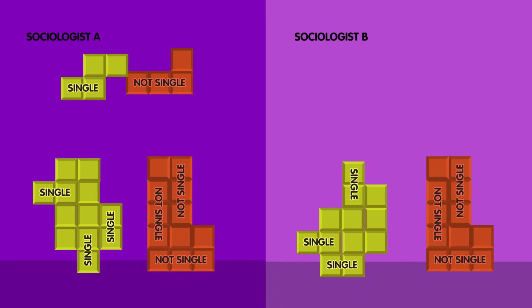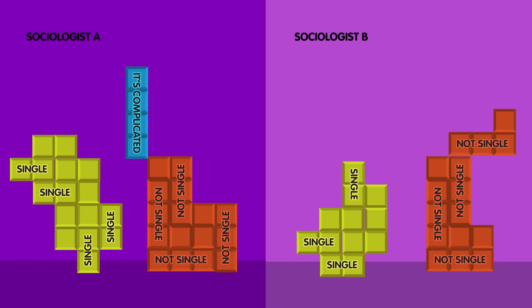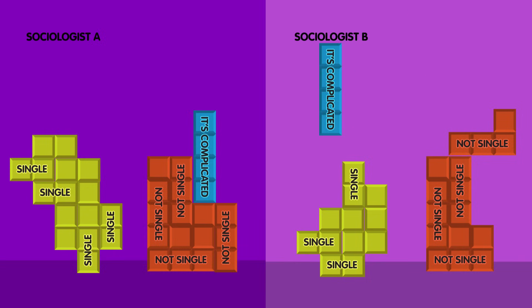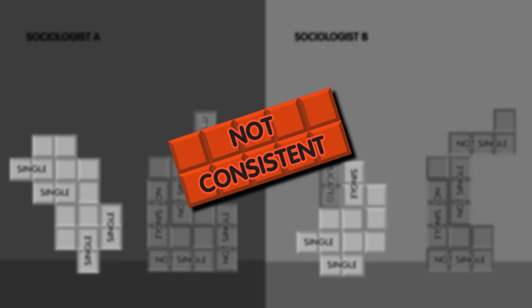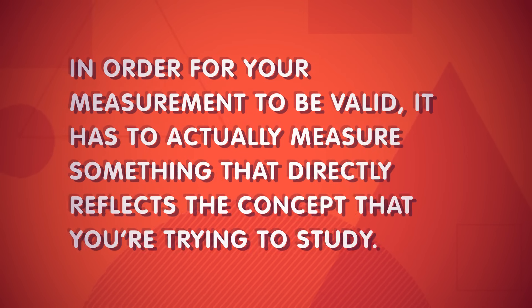Suppose you decide to use Facebook relationship status as your measure of relationship status among your subjects. For your measurement to be reliable, you have to be consistent in how you measure the variable. Say you have two categories – single or not single. Two different sociologists are going through the data, assigning values based on Facebook status. One decides that people who say 'it's complicated' get the label 'not single,' while the other decides that these people should be called 'single.' That's not consistent. Every person with the same characteristics – in this case, the same relationship status – needs to be assigned the same value. And in order for your measurement to be valid, it has to actually measure something that directly reflects the concept that you're trying to study. Facebook relationship status may be a useful measure of whether someone's single or not, but it's not a valid measure of, say, their political views.